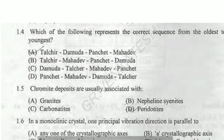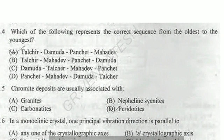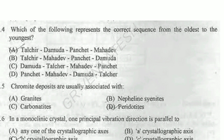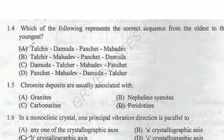Next question: which represents the correct sequence from oldest to youngest? The options — Talchir, Damodha, Mahadeva, Panchet — belong to the lithostratigraphy of the Gondwana Supergroup. In the Gondwana Supergroup there are short tricks to remember the stratigraphic successions. Option A is the correct answer.